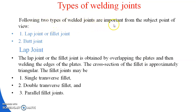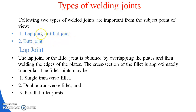Now, the types of welded joints. There are two types important from the subject point of view: the first is the lap joint, also called fillet joint, and the second is the butt joint. What is a lap joint, and what are the categories of the lap joint?